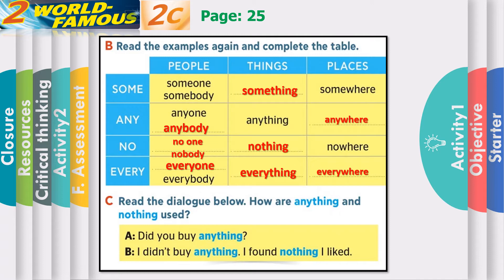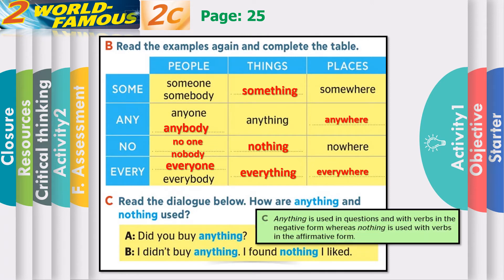Now question C: Read the dialogue below. How are 'anything' and 'nothing' used? 'Did you buy anything?' — 'I didn't buy anything.' — 'I found nothing I liked.' 'Anything' is used in questions and with verbs in the negative form. 'Nothing' is used in affirmative sentences with a positive answer. For example: 'Did you buy anything?' — you can't say 'Did you buy nothing?' When answering negatively: 'I didn't buy anything.' When answering affirmatively: 'I found nothing.' You can't say 'I found anything.'